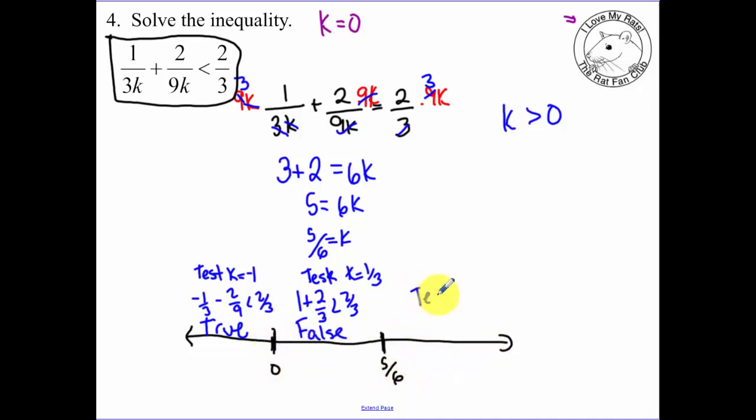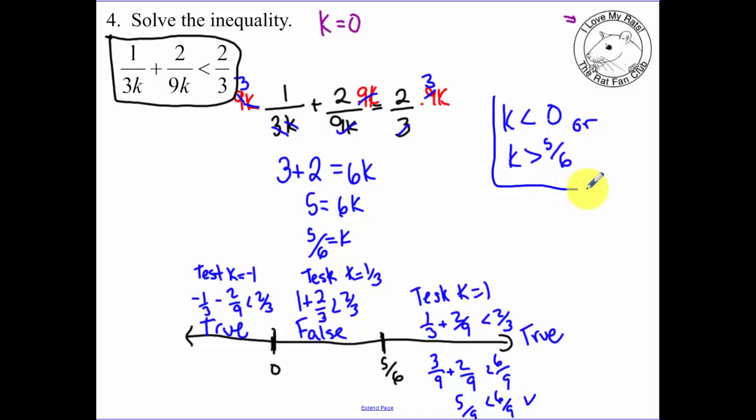Now greater than 5 sixths. I'm going to test k equal to 1. So now I have 1 third plus 2 ninths less than 2 thirds. I'm going to change all my denominators to 9. So I have 3 ninths plus 2 ninths less than 6 ninths. That's 5 ninths less than 6 ninths. That's true. That worked. So that's true for our last interval. Therefore, k is less than 0 and k is greater than 5 sixths. And that's our answer.